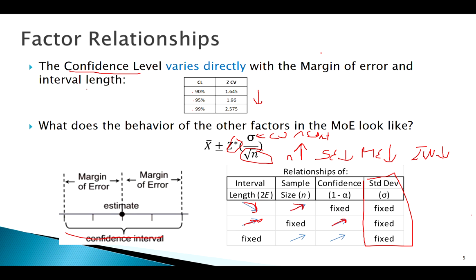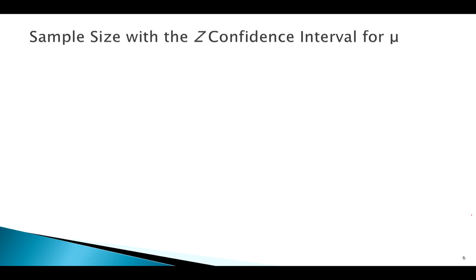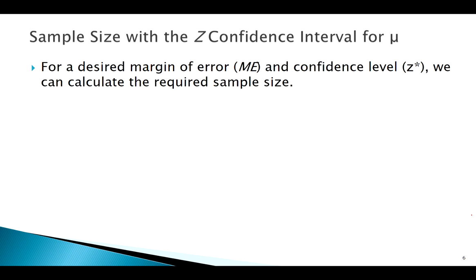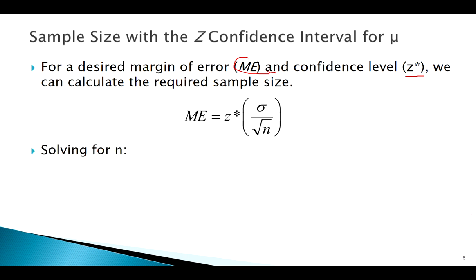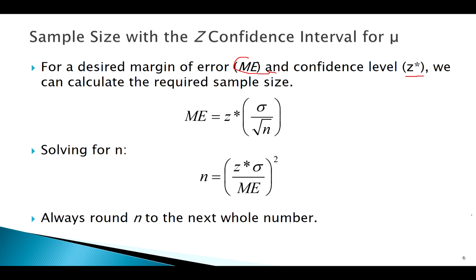If we have a desired interval in mind, we can set a confidence level and find the sample size needed to achieve it. Taking the margin of error formula and solving it for n gives us the sample size required to achieve the interval width we want. One important thing to remember: we always round up to the next whole number to maintain the desired margin of error.